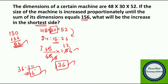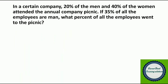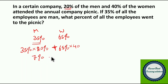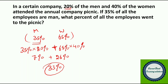Moving to question number 12. In a certain company, 20% of the men and 40% of the women attended the annual company picnic. If 35% of all employees are men, then 65% are women. 20% of 35% equals 7%, and 40% of 65% equals 26%. So 7% plus 26% equals 33% of all employees attended the picnic.